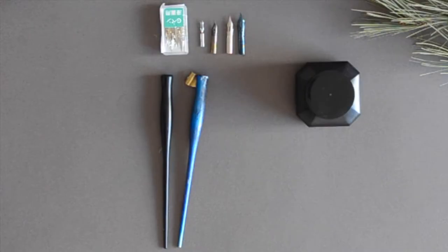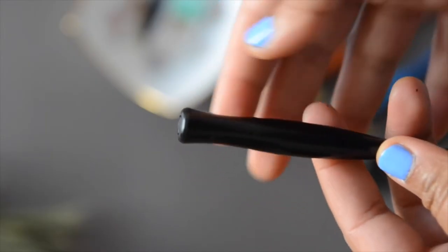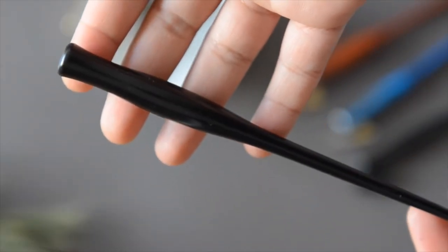For nib holders, I use both a straight holder for flourishing and an oblique holder for general writing as it helps me keep the angle. This is the Speedball plastic straight holder and it's fine for most purposes. It's really easily available as well.